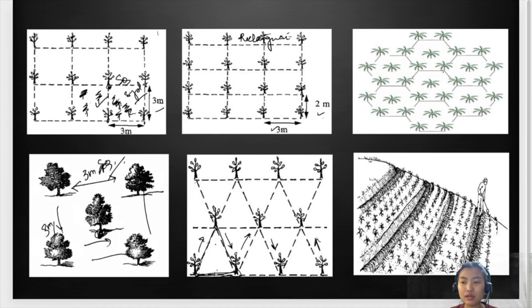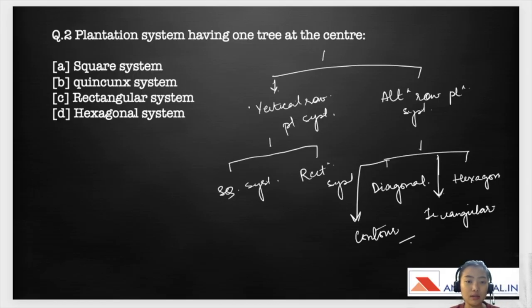To increase the water and soil conservation we go for a contour layout system. This hexagonal system gives 15% more cropping density than the square system and this quincunx system the cropping density would be double the square system. Going back to the question, the answer for this is plantation system having one tree at the center would be quincunx system.